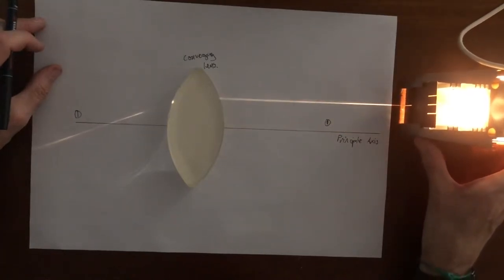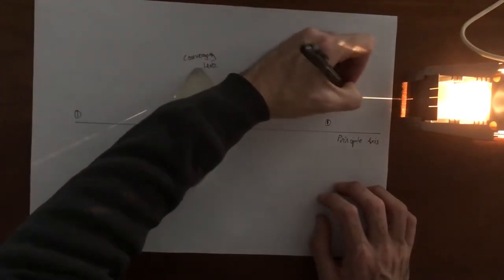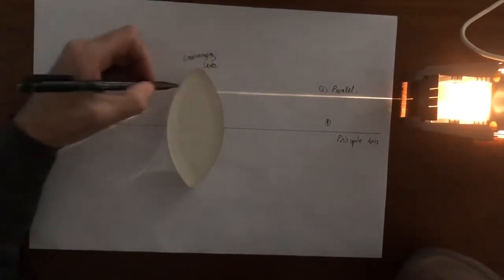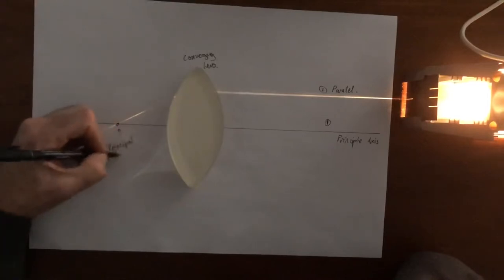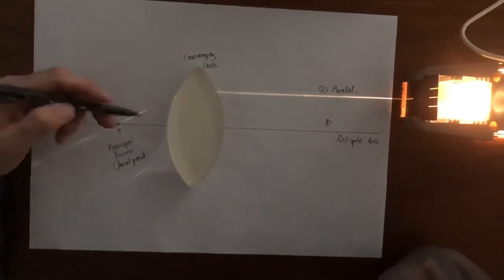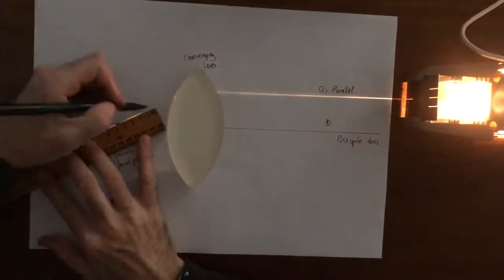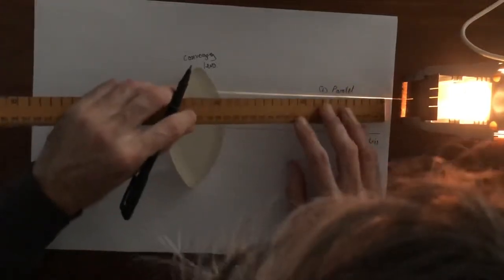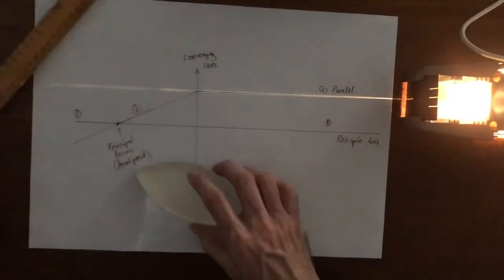Now let's have a ray that's coming in parallel to the principal axis. This is ray number two, and it's parallel to the principal axis. What we can see is that it will be converged towards the principal axis and it passes through this point here. This point is called the principal focus, or sometimes just the focal point. Ray number two comes in and then comes down through the principal focus like that.